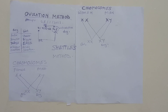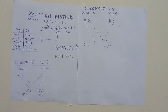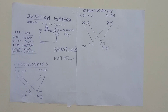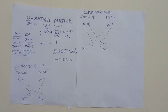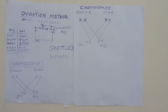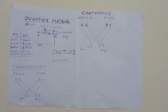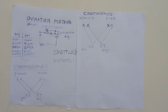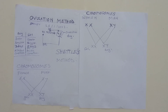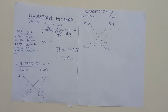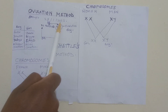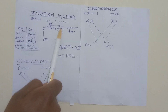In conclusion on the ovulation method, Shettles suggests that if you want to get a baby boy, you need to deposit the sperm three days prior to ovulation, or on the ovulation day itself, to get a baby boy.